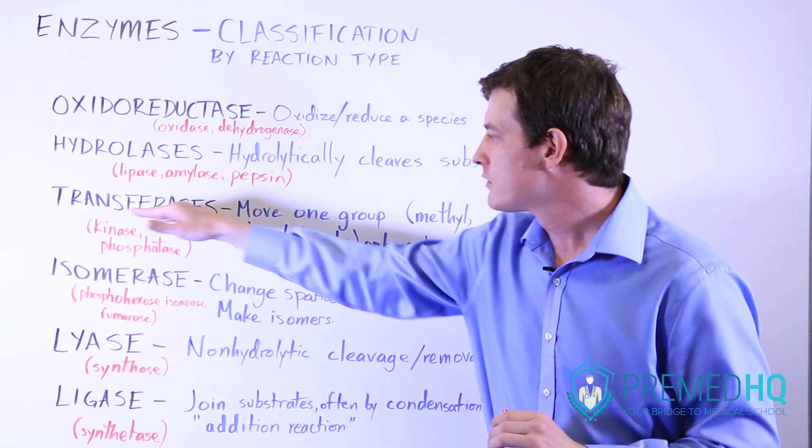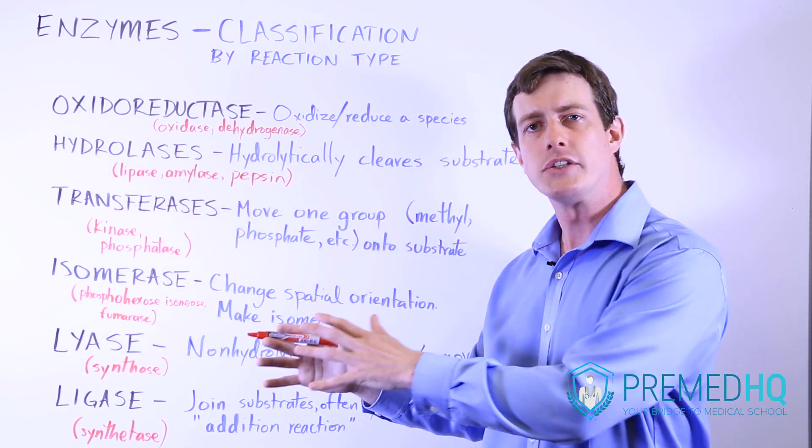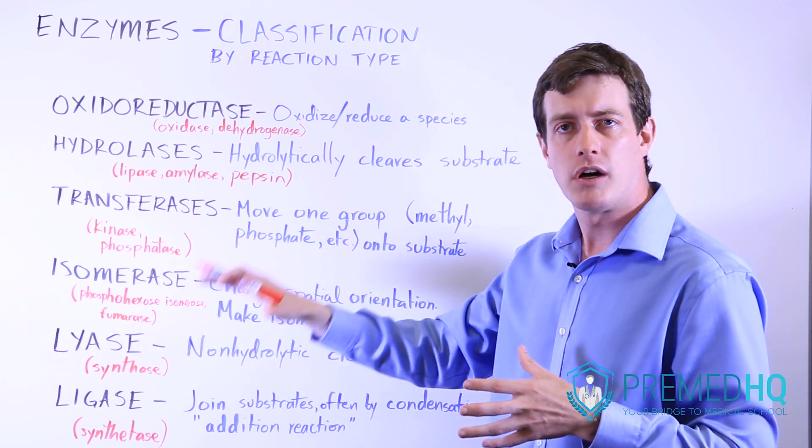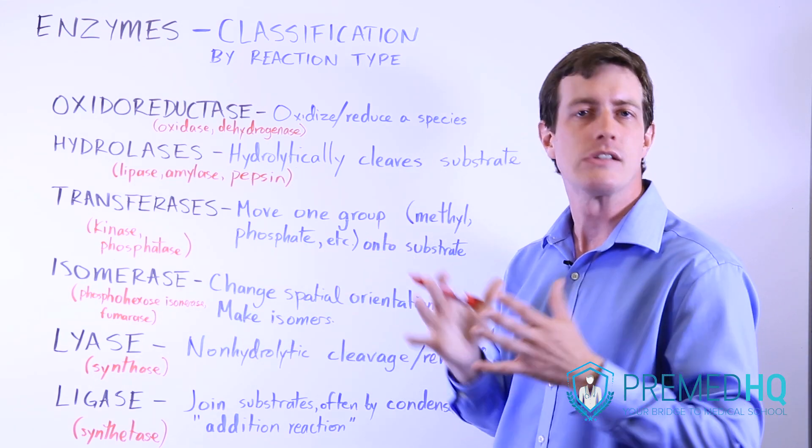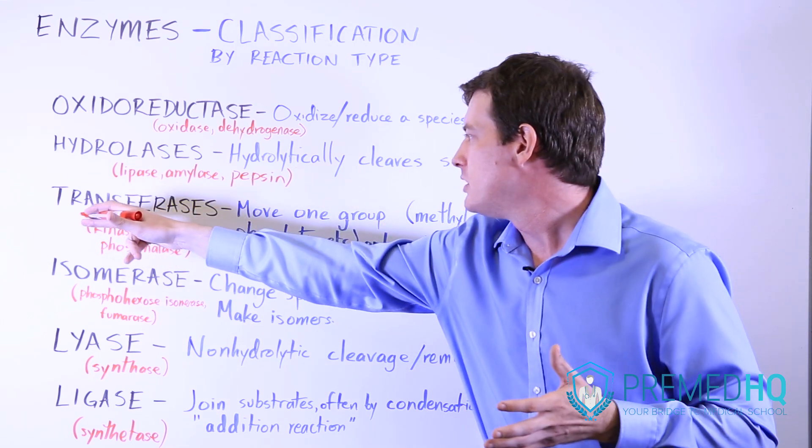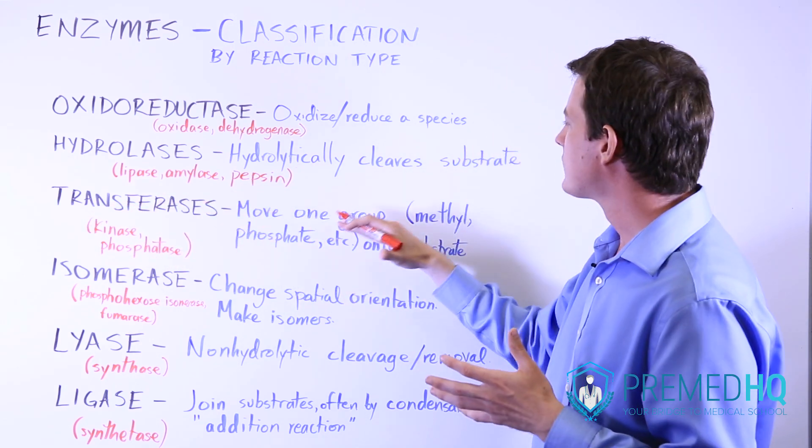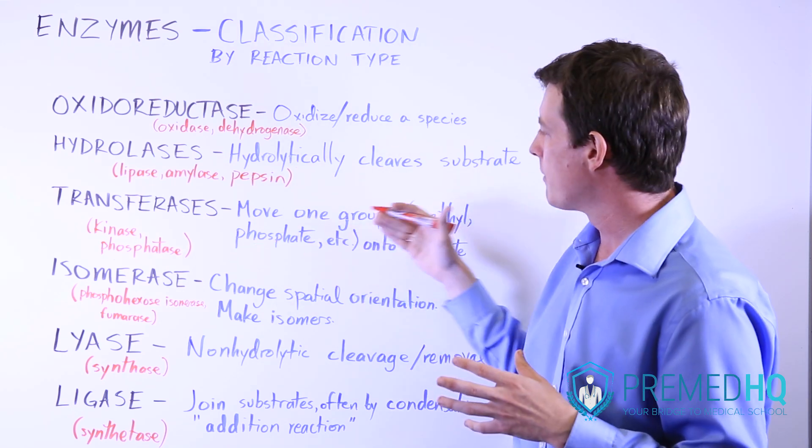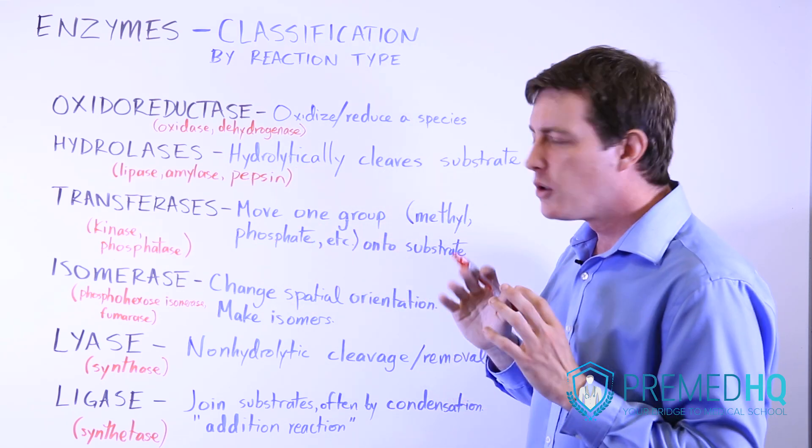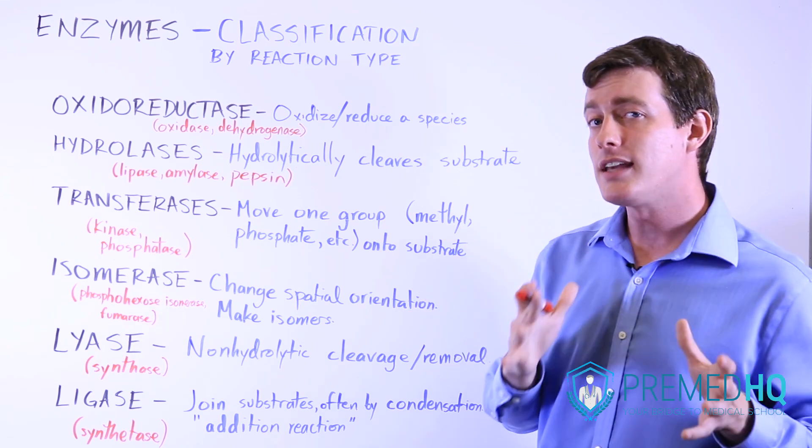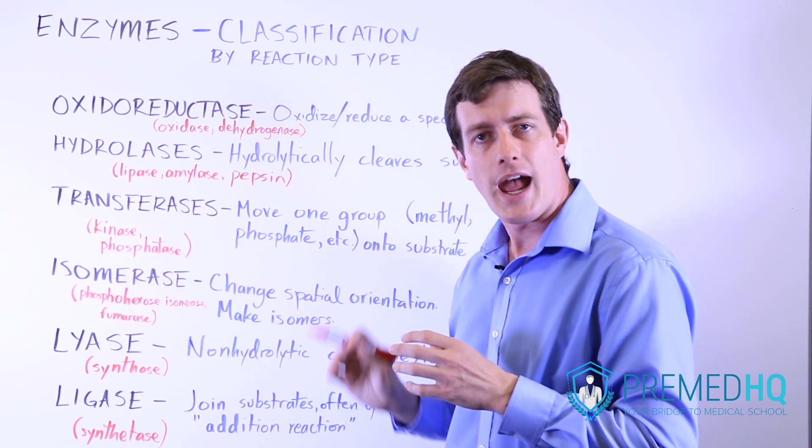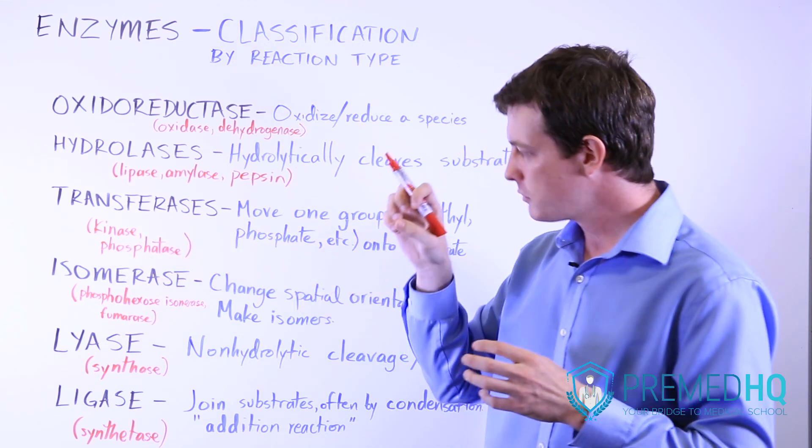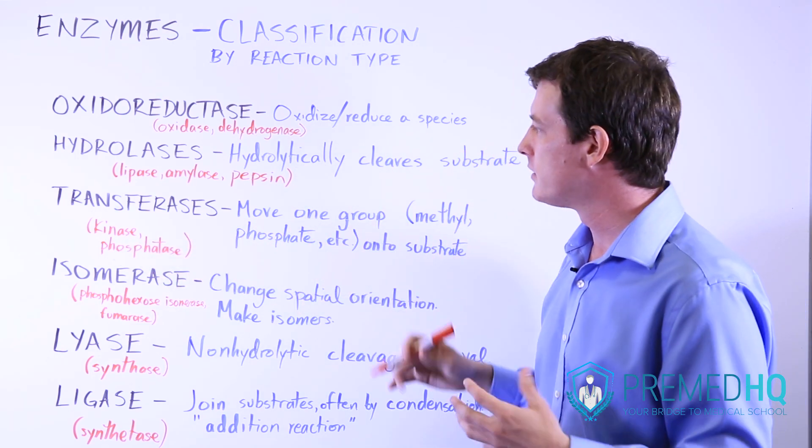You'll be using a transferase to do that. So when you're moving a methyl group onto or off of a substrate, when you're moving a phosphate group onto or off, or perhaps an acyl group, any of those are going to be transferases where you take some group, often a functional group or something like that, or some compound like a methyl or phosphate. You might encounter these as kinases, which add phosphate groups onto something, and phosphatases, which remove phosphate groups from some compound.